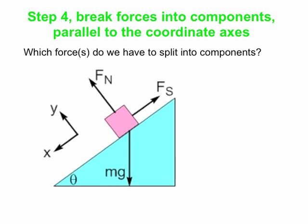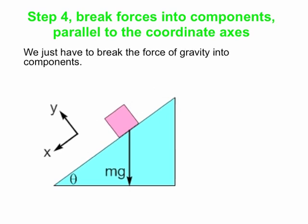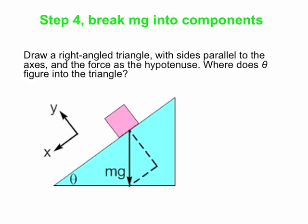We need to break forces into components parallel to these coordinate axes. We do not need to break up the static friction force — it's already all in the x direction — and we do not need to break up the normal force — it's already all in the y direction. The only one we need to decompose is the force of gravity. We want to know how much of mg goes down the slope and how much goes perpendicular into the slope. So let's draw a right triangle with one side parallel to the y axis and the other parallel to the x axis. The angle theta from the bottom of the slope must appear somewhere in this triangle.